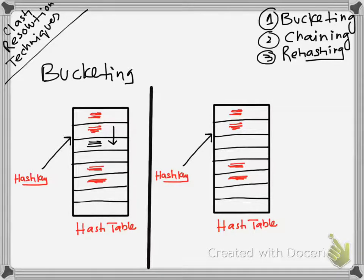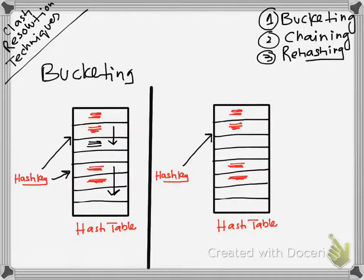Another hash key points to this location. In this case, the computer will find a clash over here, so the computer would go further and save over here. Collision always happens, but with a smart hashing algorithm, we can reduce the number of collisions.